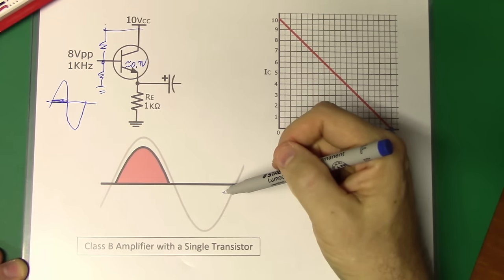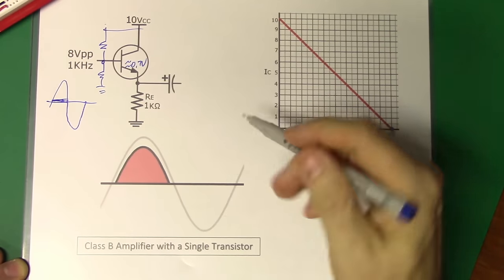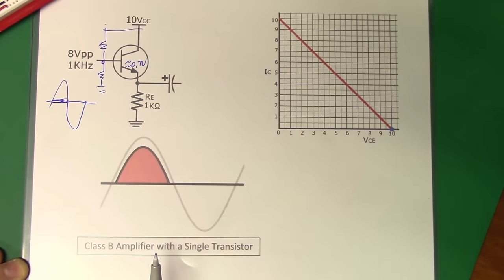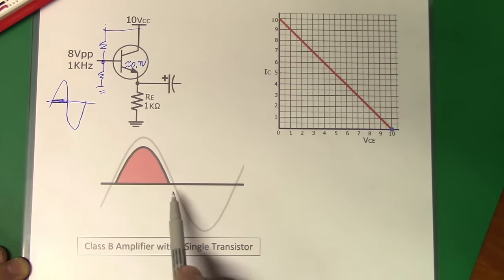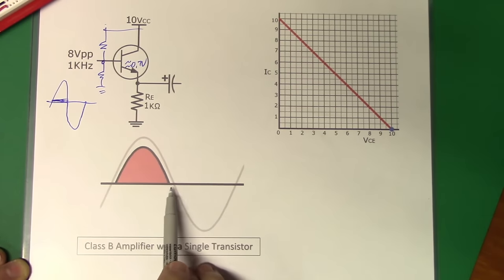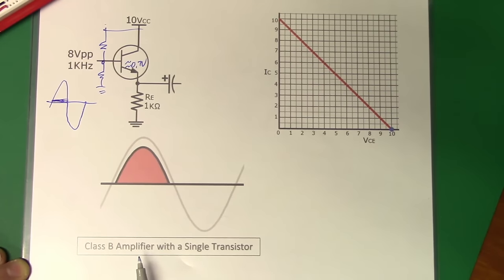It's extremely efficient — again almost 79% — but it has extremely poor fidelity. So let's go ahead and take a look at this actual circuit in operation, and then we'll see how we can improve it to include both parts of the sine wave, and perhaps bias it a little bit better to eliminate part of the losses that we have because of that base-emitter turn-on voltage.